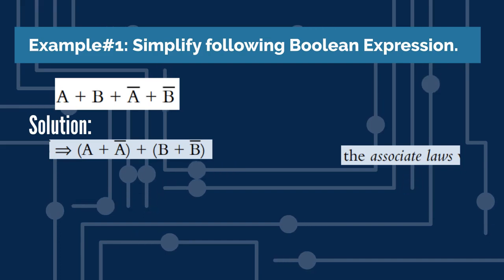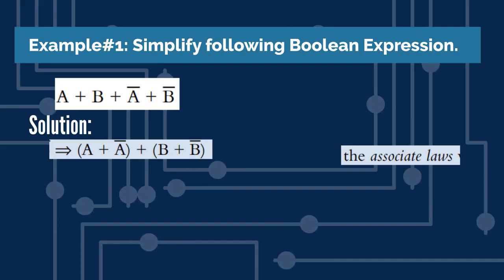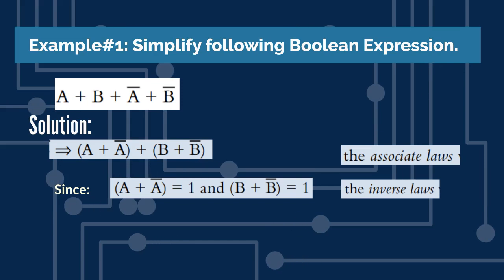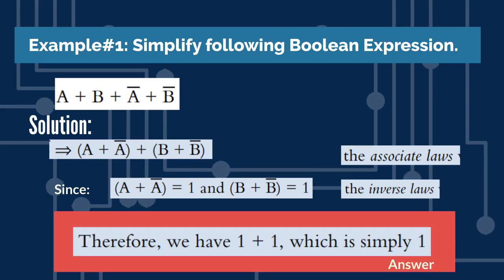We can rearrange the expression using the associative law of Boolean. According to the inverse law of Boolean, A plus A bar is equal to 1. After replacing A plus A bar and B plus B bar with 1, we get 1 plus 1. And we know that 1 plus 1 is equal to a single 1.